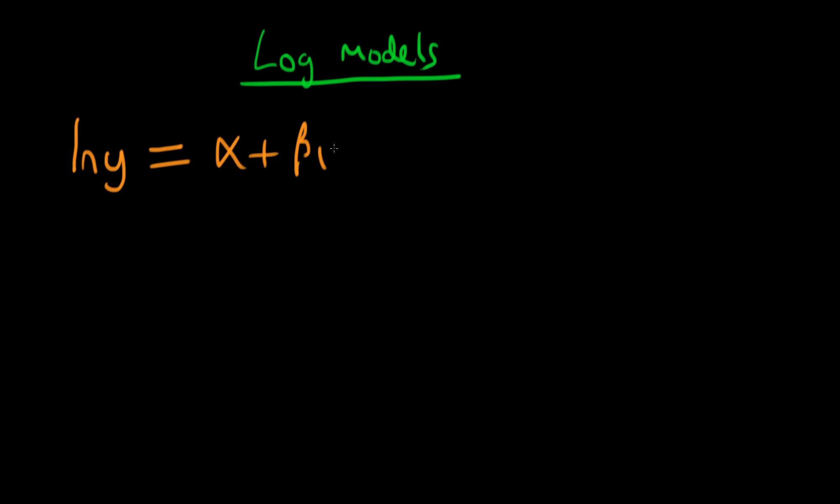So my model is log y equals alpha plus beta 1 times log x1 plus beta 2 times log x2. This is the case where I've got two independent variables, but it will serve us well for this purpose. It's easy to generalize this to a situation where you've got p independent variables.